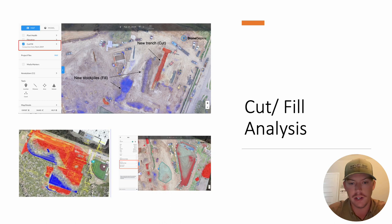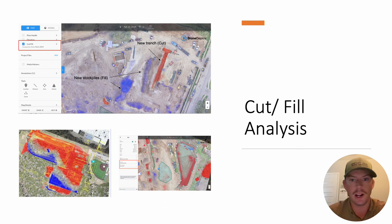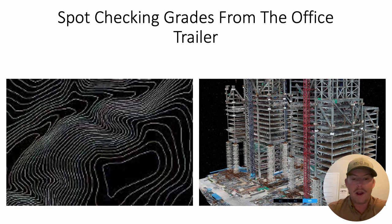Cut and fill analysis — you can see right here where my mouse is: a new trench cut and new stockpile fill, which is what we've been learning in class. It'll actually give you a cubic yardage moved so far. For my old project, we were able to see that we had moved over a million cubic yards of dirt from start to finish. It gives us a lot more management capability.